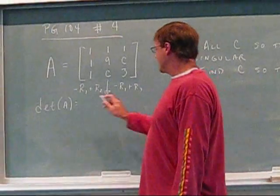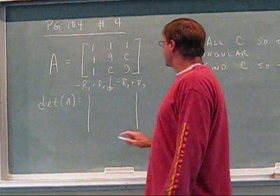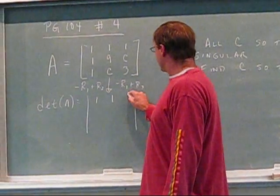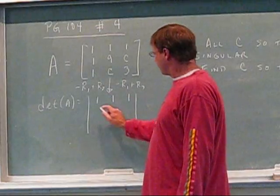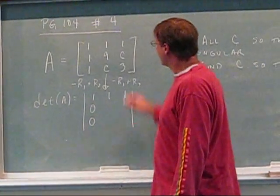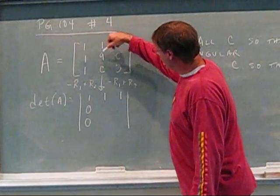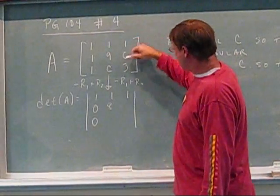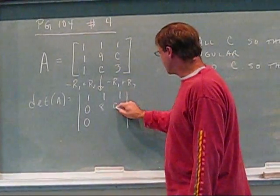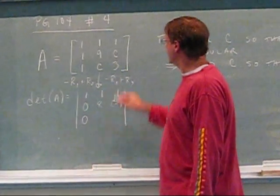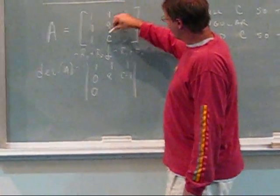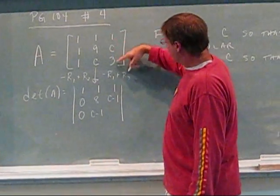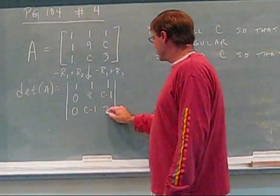The result is that I get a one, a one, and a one in the first column, and these become zeros. Then: negative one plus nine is eight; negative one plus C is C minus one; negative one plus C is C minus one; and negative one plus three is two.